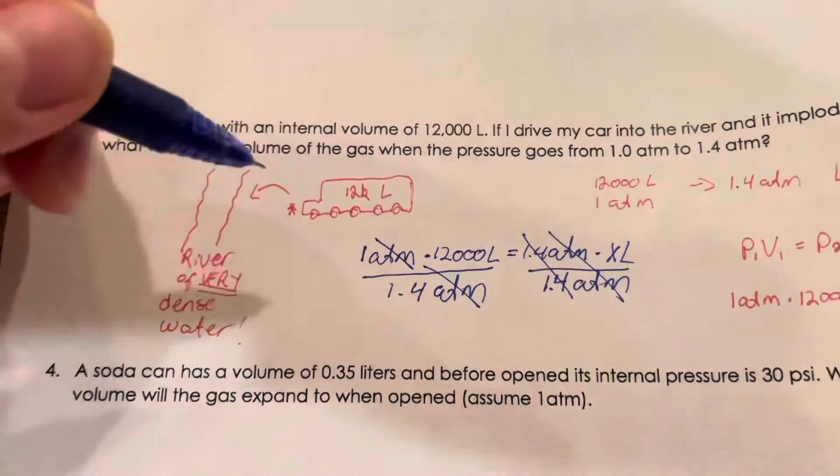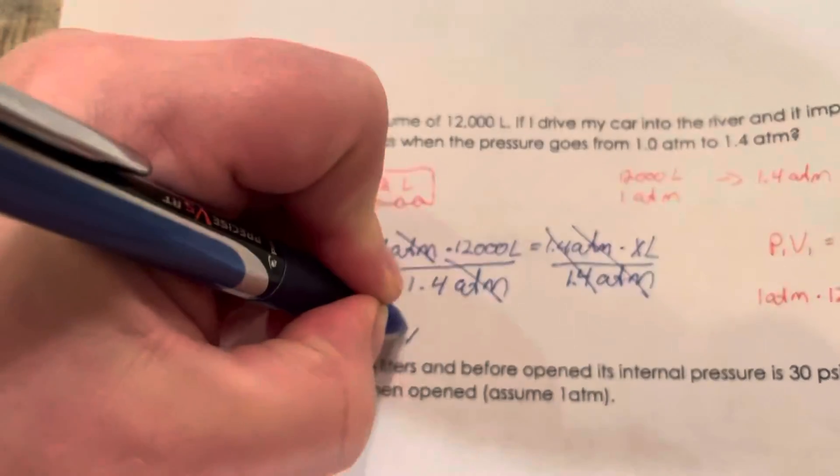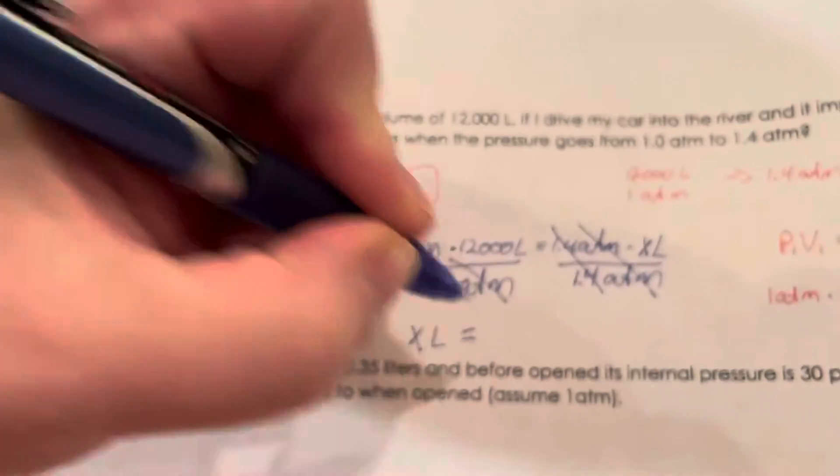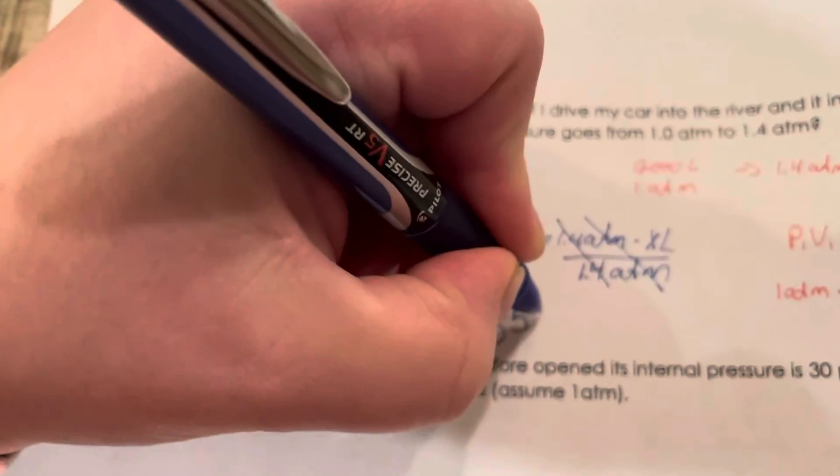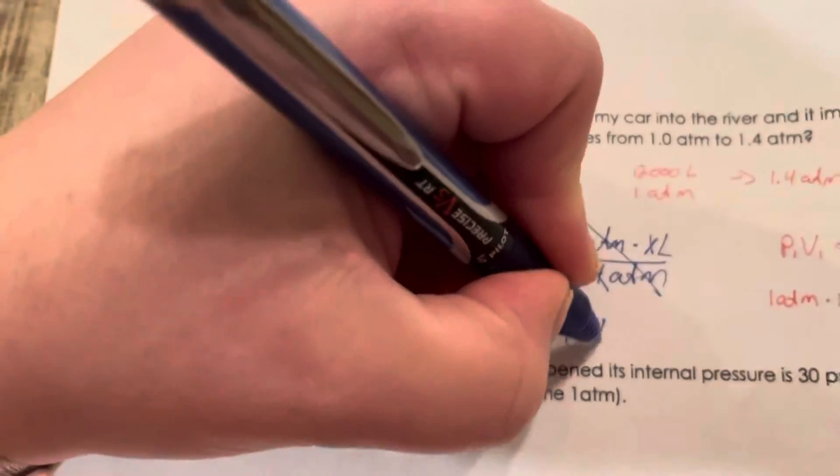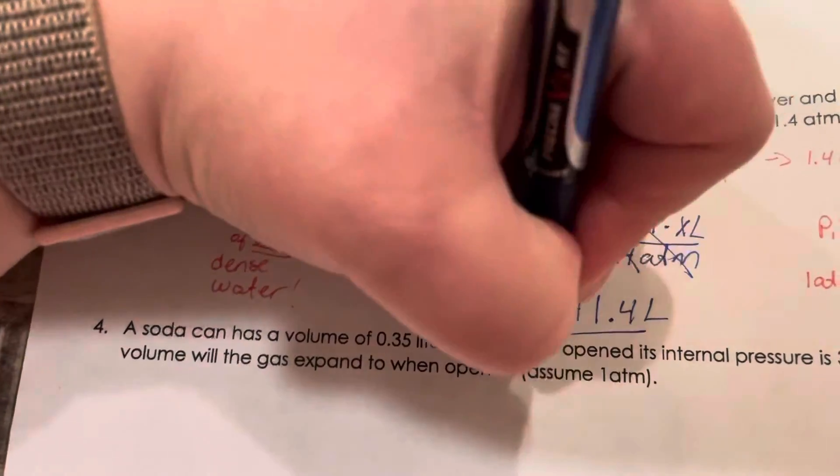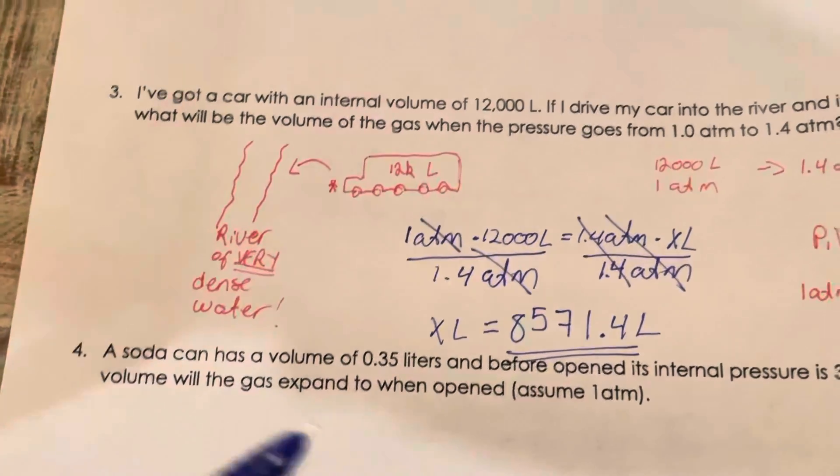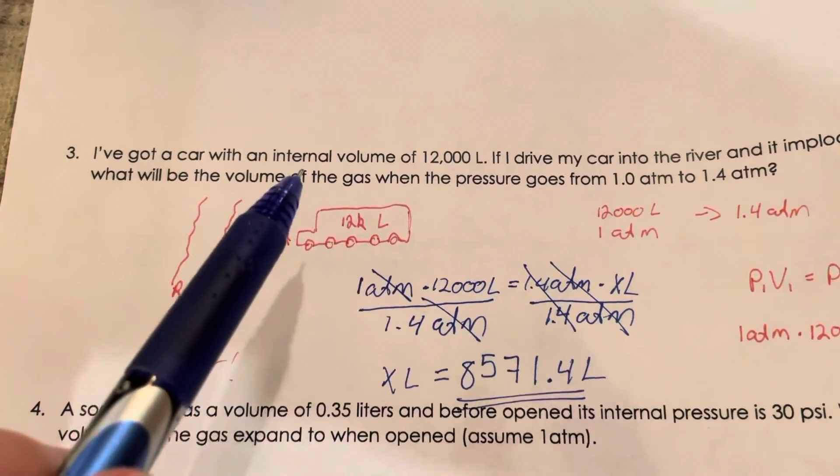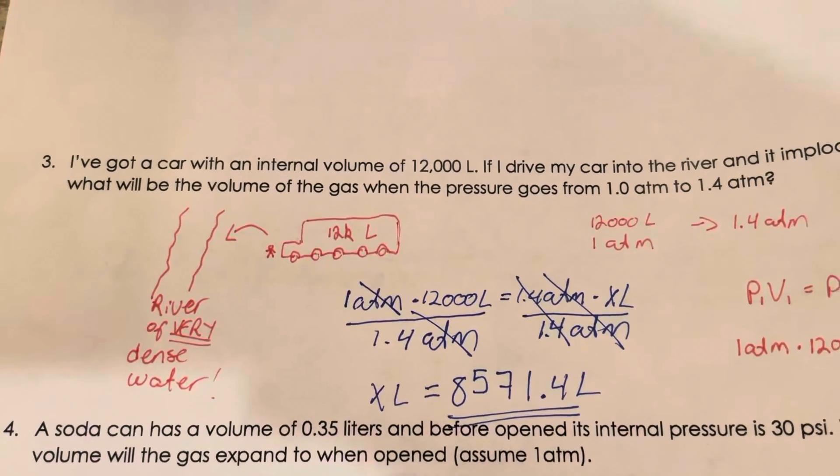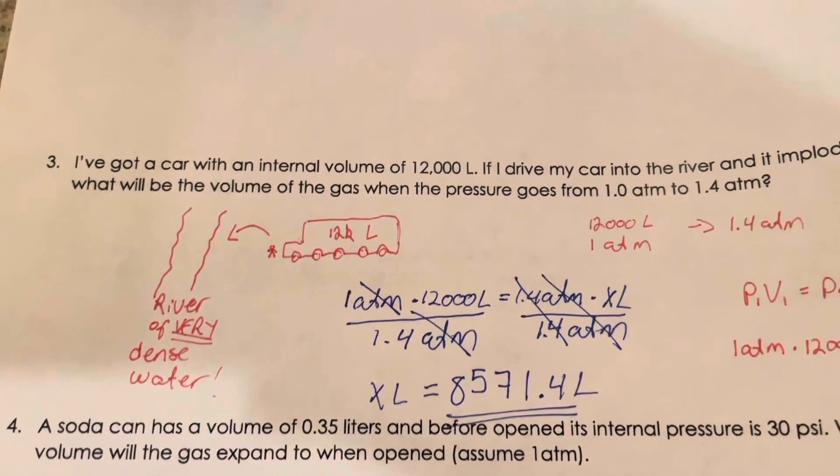One times 12,000 is 12,000, I have to divide it by 1.4, and I'm gonna end up with X equals 8571.4 liters.